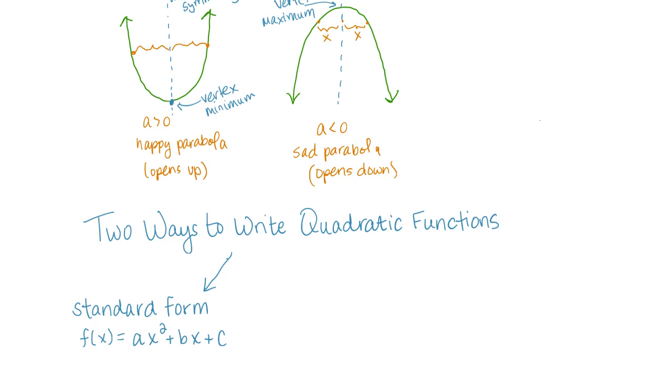There are actually two ways to write quadratic functions. I presented a quadratic function in standard form above: f(x) = ax² + bx + c, where a, b, and c are the coefficients. a is the coefficient on the second degree term. b is the coefficient on the first degree term.